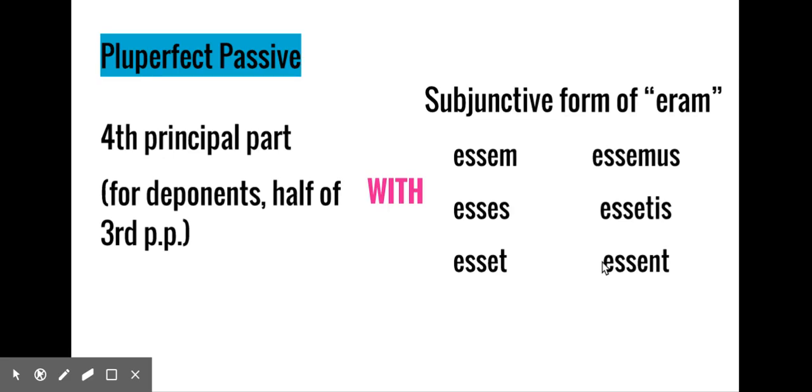When we learned the pluperfect passive indicative, we said that there was a fourth principal part that was with a form of eram. Eram, eras, erat, eramus, eratis, erant.